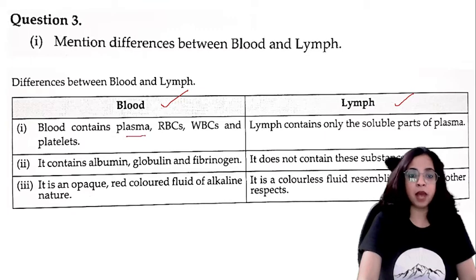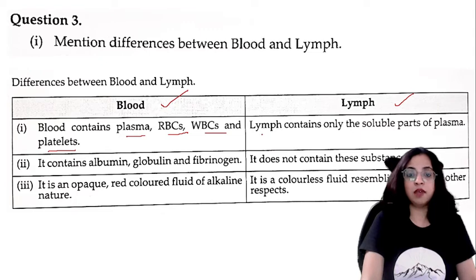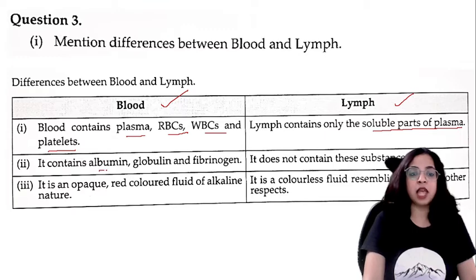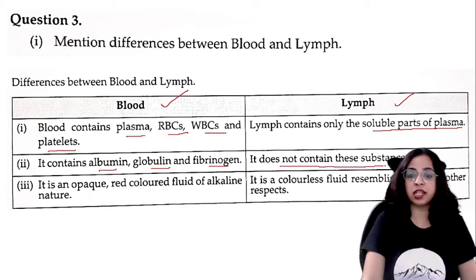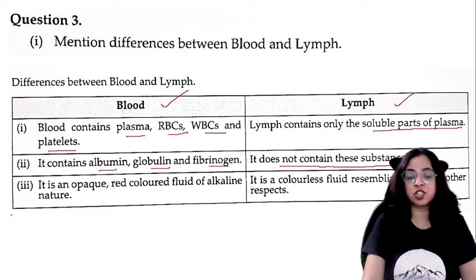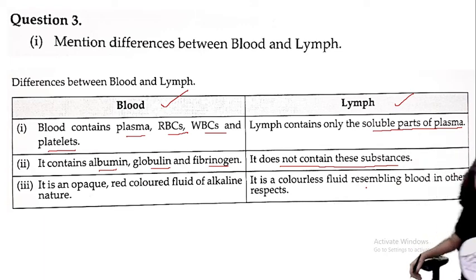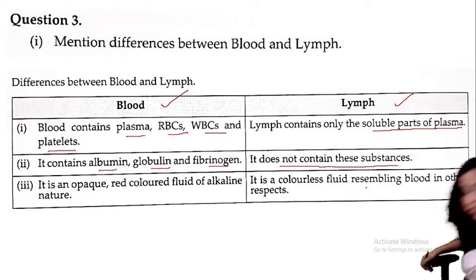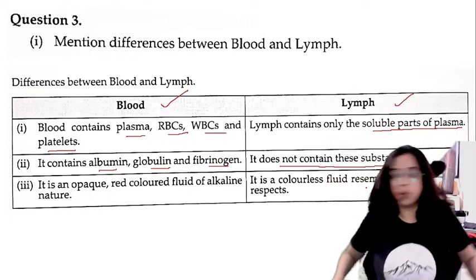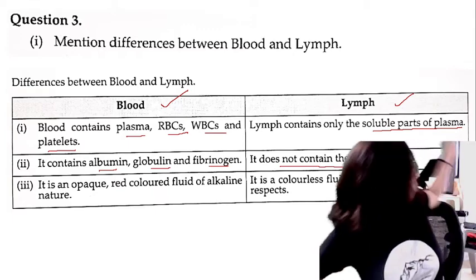Mention differences between blood and lymph — three marks, so three differences. Blood contains plasma, RBCs, WBCs, and platelets; whereas lymph contains only the soluble parts of plasma. Blood contains albumin, globulin, and fibrinogen; whereas lymph does not contain these substances. Blood is an opaque red-colored fluid of alkaline nature; whereas lymph is a colorless fluid resembling blood in other respects. You can formulate the differences on your own using these points.